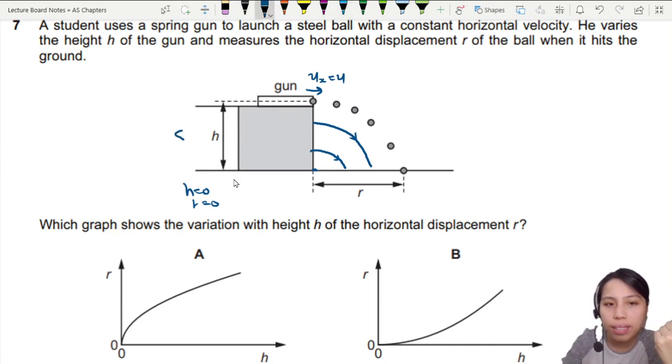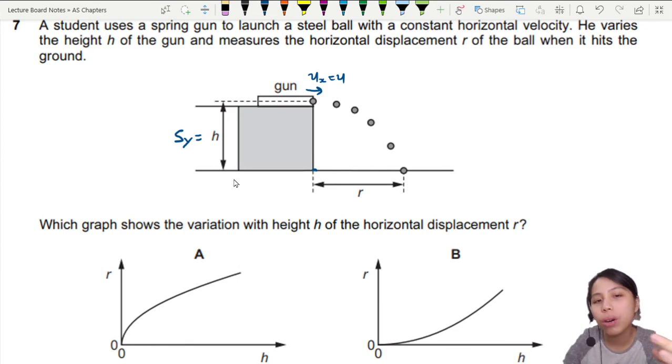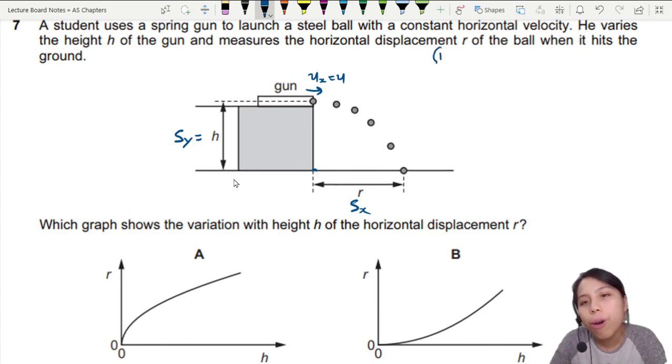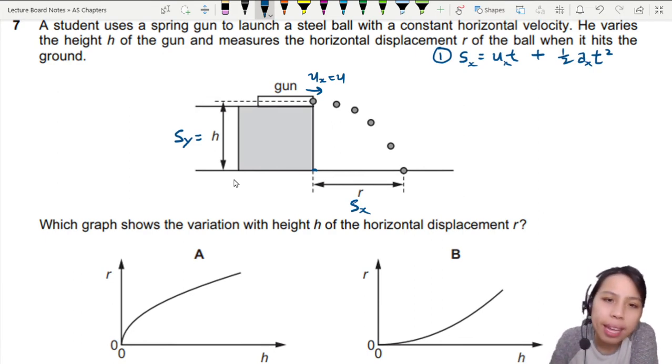Vertical displacement is also known as S_y. From our SUVAT equations, right? And the horizontal displacement R here is also what we call S_x. So equation number one. Let's think of the horizontal. Horizontal equation, there's only one equation I know that starts with S. Maybe we'll try this first: S = UT + 1/2 AT^2. But I'm looking at the horizontal, so all these have to be in the x-component.